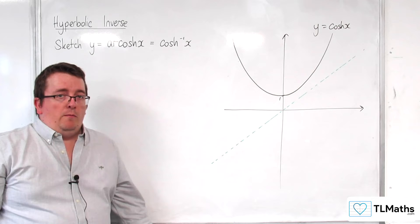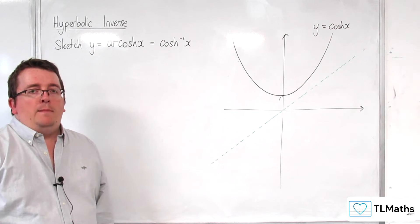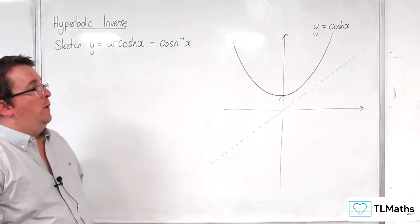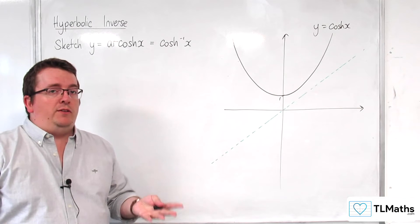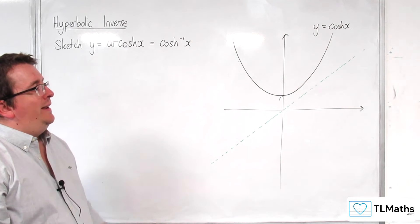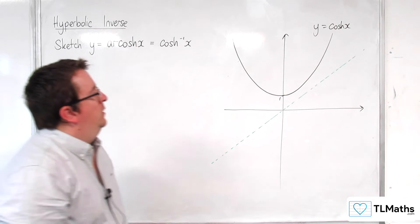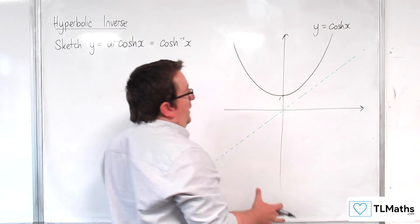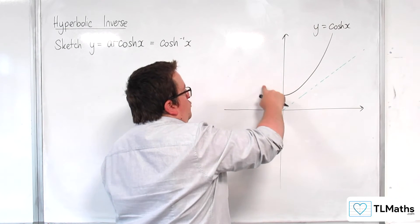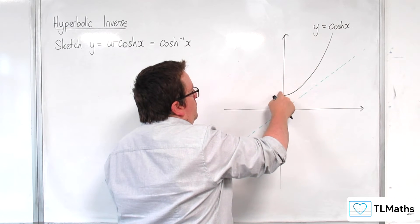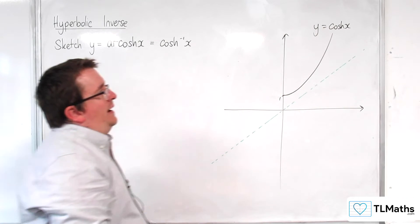Now, the problem is this: y equals cosh of x is many to 1. It's not a 1 to 1 function. So what we need to do is restrict the domain of cosh x in order to define the inverse function. The obvious thing to do would be to just look at x is greater than or equal to 0. We're going to cut it in half and just have this.